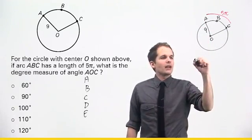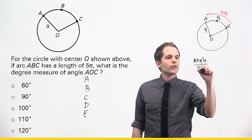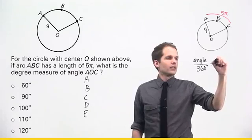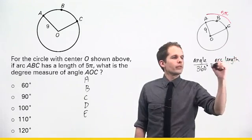So I could say that an angle, the central angle, over the total of 360 is in proportion to the arc length over the circumference.